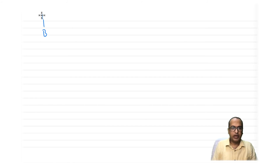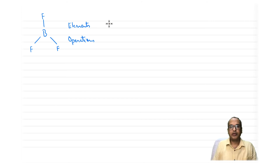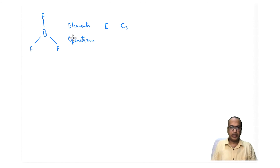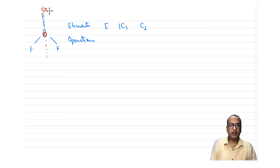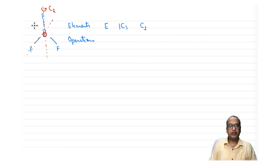For BF3: elements and operations. E is listed first. The principal axis C3 is perpendicular to the plane of the board passing through the boron atom — there is only one C3. The C2 axes pass through each B–F bond in the plane of the board. There are three such B–F bonds, so there are three C2 axes.